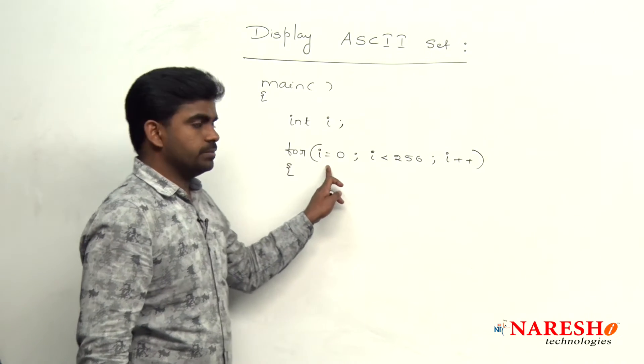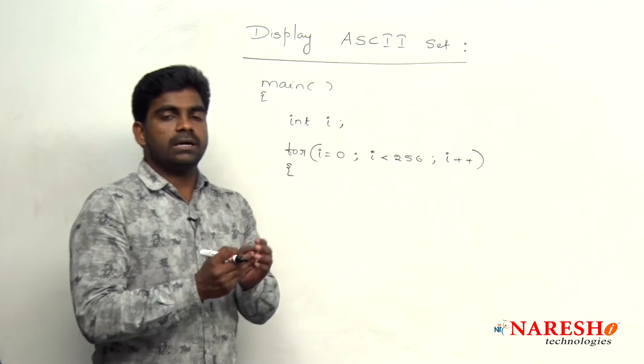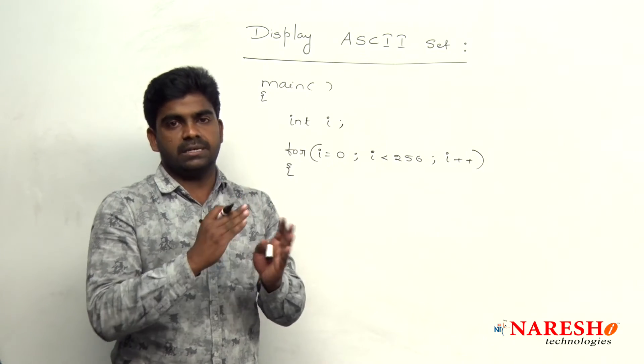First i value 0, the condition is true the control come inside 0 corresponding value I mean the character I want to display side by side.